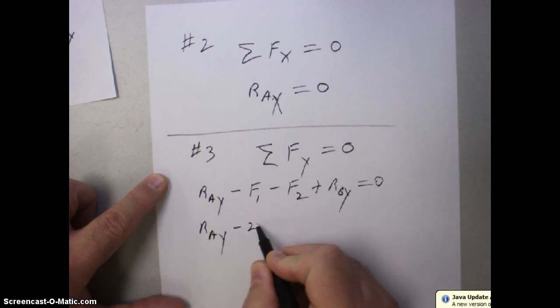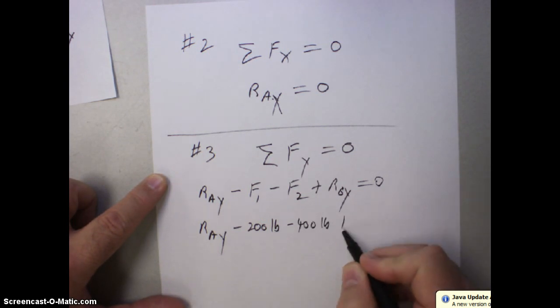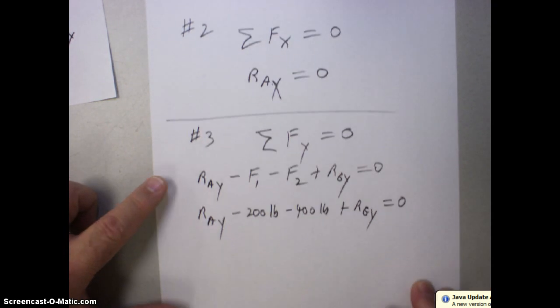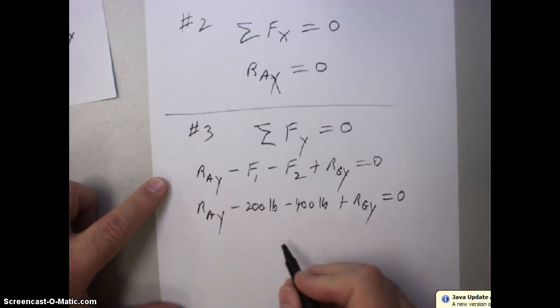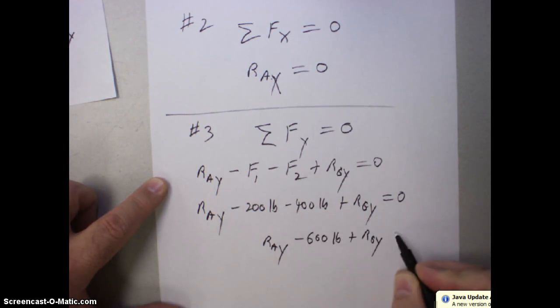RAY minus the 200 pounds as indicated on the diagram minus the 400 pounds plus RGY equal to zero. Do some collecting here.